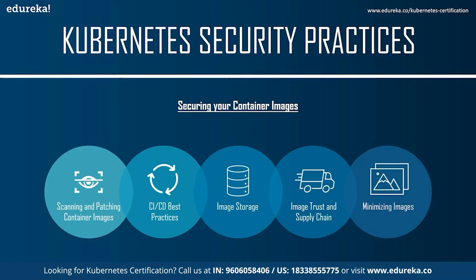You should scan any third-party container images as well as your own organization's images, and rescan on a regular basis as new vulnerabilities continue to be found. Once you've identified a vulnerable container image, you need to update the container to use a fixed version of the package. Do not SSH into running containers and run yum update or apt-get update — this is an anti-pattern. When running hundreds or thousands of instances across a cluster, manual patching quickly becomes unfeasible, especially given Kubernetes self-healing and auto-scaling behavior.